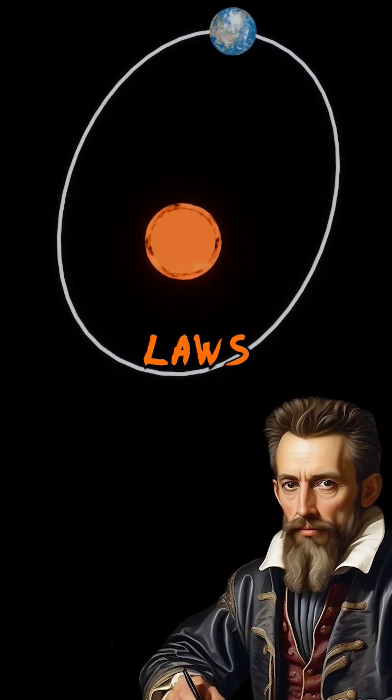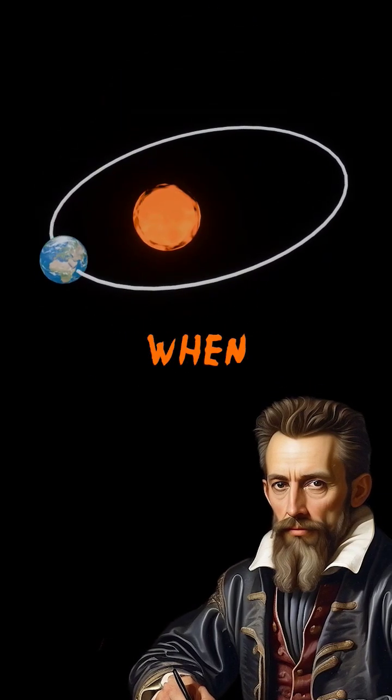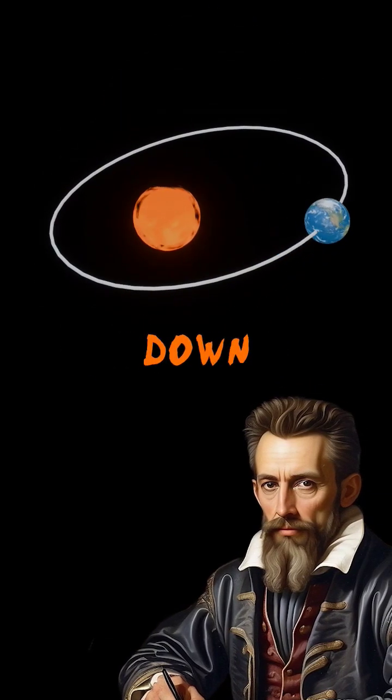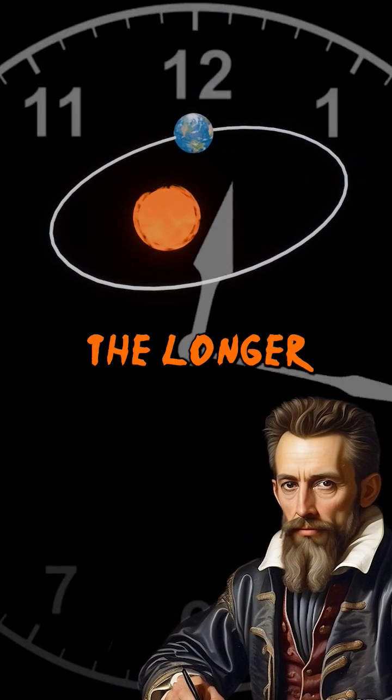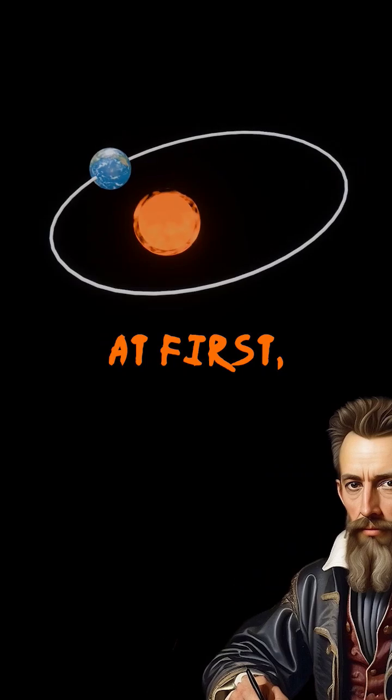Kepler's groundbreaking laws described how planets speed up when close to the sun and slow down when farther away. Also, the farther a planet is from the sun, the longer its year becomes.